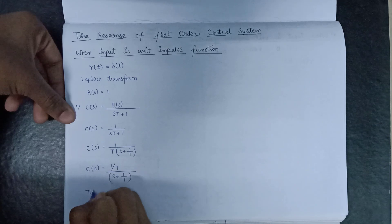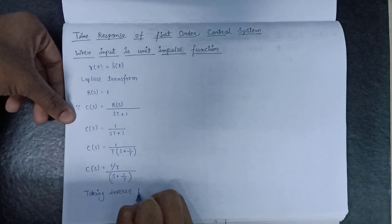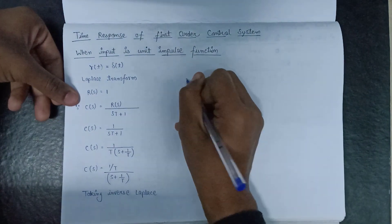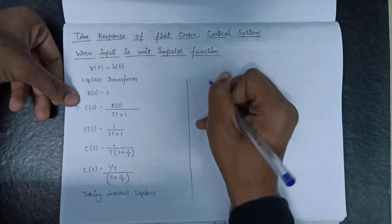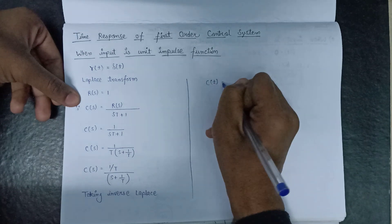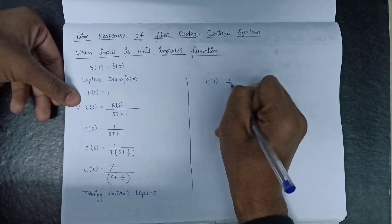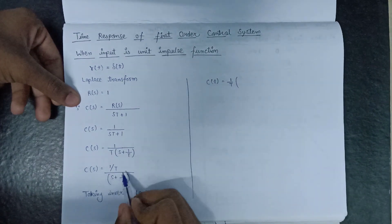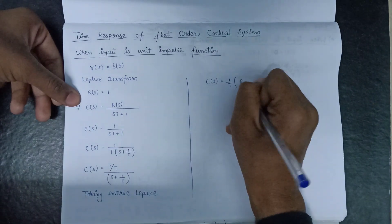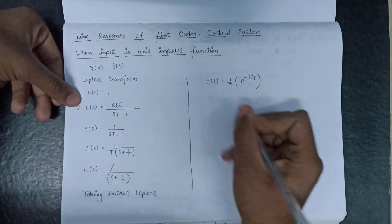Now on taking the inverse Laplace transform, C of s will be converted into C of t. Since 1 over T is a constant term it will be written as is, and the inverse Laplace transform of 1 over s plus a will be equal to e to the power minus a·t. So we get e to the power minus t over capital T.